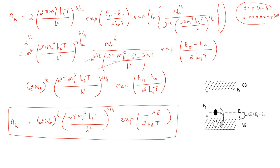So this is the end of the derivation. What I can conclude here is: the density of holes in the valence band is proportional to the square root of the acceptor concentration — that is one result. Another result is that when temperature is increased, the Fermi energy level increases; at low temperature it increases up to the intrinsic Fermi level. So with this we are completing this derivation.